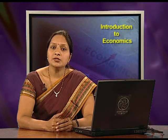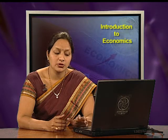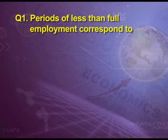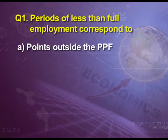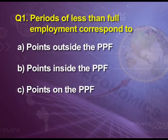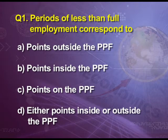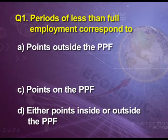Now let us do some multiple choice questions to test our knowledge. Question 1: If there is less than full employment, where will the point be? Option A: outside the PPF; Option B: inside the PPF; Option C: on the PPF; Option D: anywhere. The answer is B — inside the PPF. Less than full employment means resources are underutilized, and if resources are underutilized, the point will be inside the PPF.